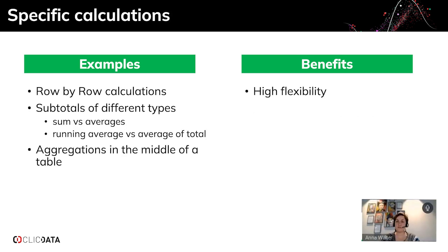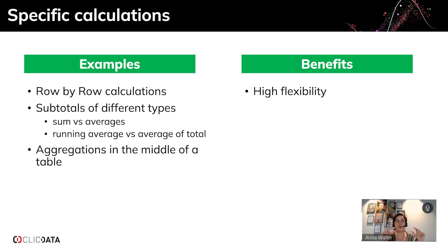Another use case is when you have very specific calculations, like row-by-row calculations — for example, dividing row two by row one, or doing a sum of row five and row six in row four. The scorecard table is perfect for this because you can define content and calculations cell by cell and row by row. In a classic table like the simple table or the drill-down table, this is more challenging because you'd have to deal with a lot of formulas and those widgets aren't really designed for it.